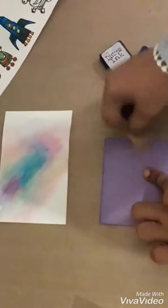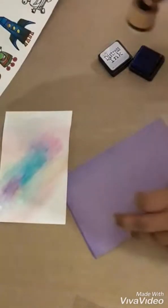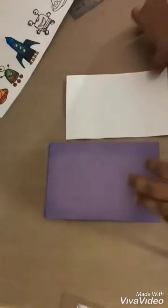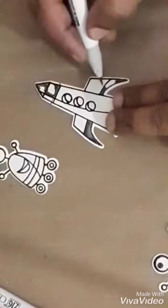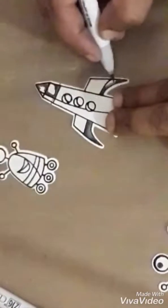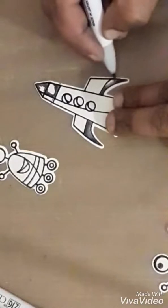I'm going to use my double-sided foam tape and stick this on my main card. I'm using the double-sided foam tape throughout for my base and for my images, so that my card has a little bit of 3D effect to it.